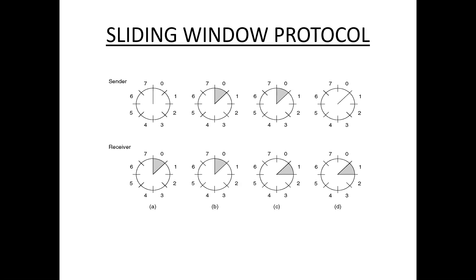By using sliding window protocol, we are transmitting more than one frame at a time. Multiple frames need to be transmitted so that efficiency can be greatly increased. In stop-and-wait protocol only one frame can be transmitted at a time, whereas in sliding window protocol more than one frame can be transmitted at a time. That is the difference between stop-and-wait protocol and sliding window protocol.